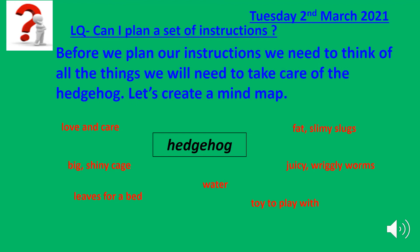Before we plan our instructions we need to think of all the things we will need to take care of a hedgehog. Let's create a mind map. A hedgehog would need a big shiny cage, leaves for a bed, water to drink, something delicious to eat like fat slimy slugs and juicy wriggly worms, a toy to play with, and definitely love and care. All pets need love and care.